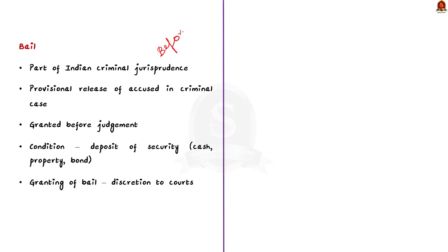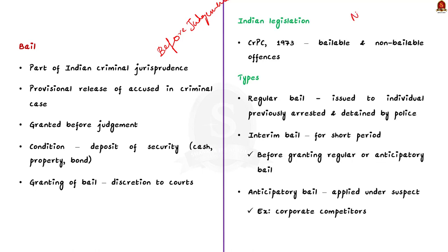Security may be cash, property papers, or bonds of private persons. If the bailed person does not return at the appropriate time, the security deposited by them will be forfeited. Courts have greater discretion to grant or deny bail in the case of persons under criminal arrest. As far as laws are concerned, the term bail is not defined in any legislation. But in the Criminal Procedure Code (CrPC) 1973, the terms 'bailable offence' and 'non-bailable offence' are defined. Generally, there are three major types of bail.